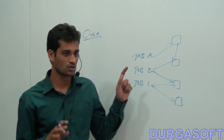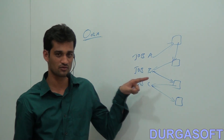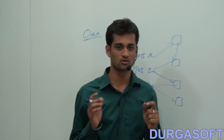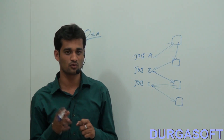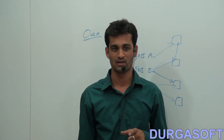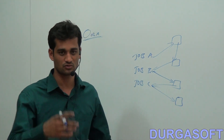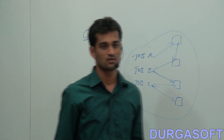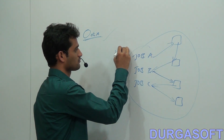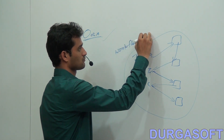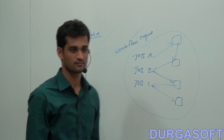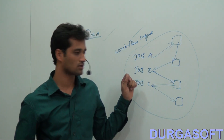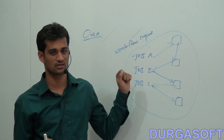So do we need some coordination between each and every job? Yes, there should be some coordination. Who is going to take care of that? Oozie will take care of how to coordinate one job to another — getting output from one job and passing that output to another job as input. That is why we call Oozie a workflow engine.